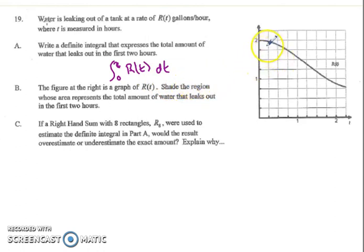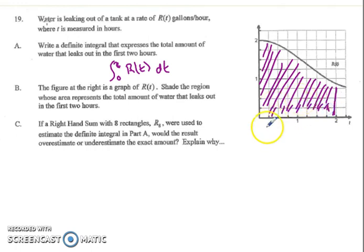And part b says shade the region. Well, the region is all of the area bound by the function and the t-axis on the interval from 0 to 2. So that's the shaded region.